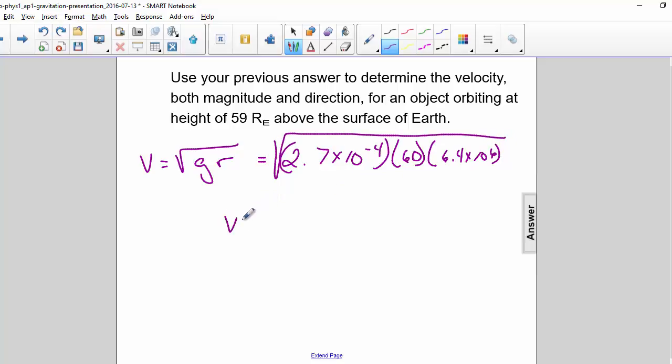So we get v equals 1037 times 10 to the third. Now in order to take that square root, we need to change the exponents, so we get 103.7 times 10 to the fourth.